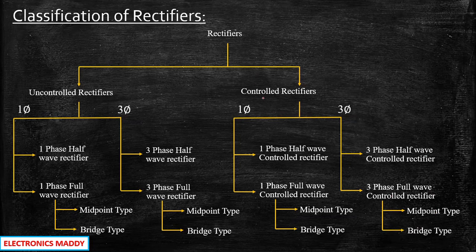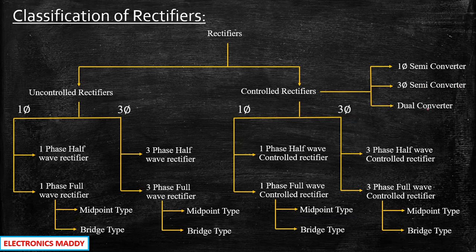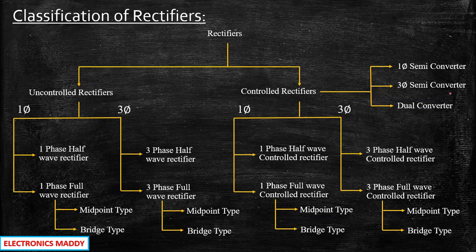In addition to these configurations, there are also the single-phase semi-converter — also called the single-phase half controlled rectifier — and the three-phase semi-converter, or three-phase half controlled rectifier. There is also the dual converter. In a half controlled rectifier, only specific thyristors are controlled: for example, in a four-component configuration, two thyristors and two diodes are used instead of four thyristors.